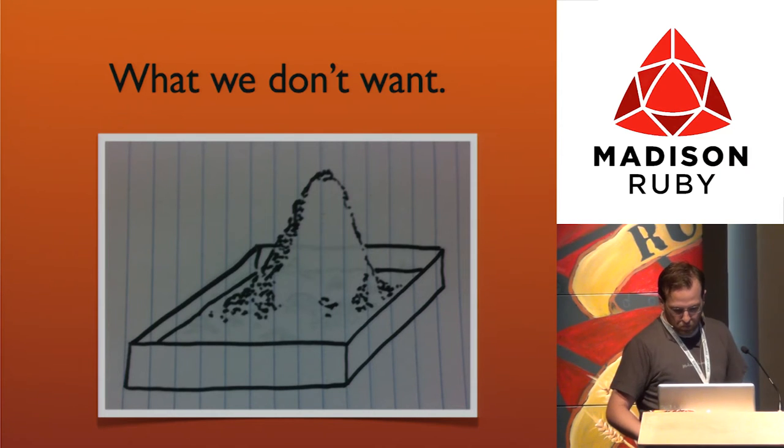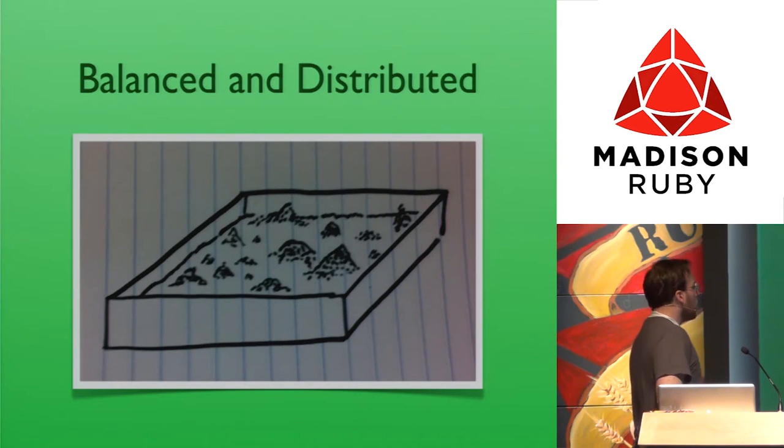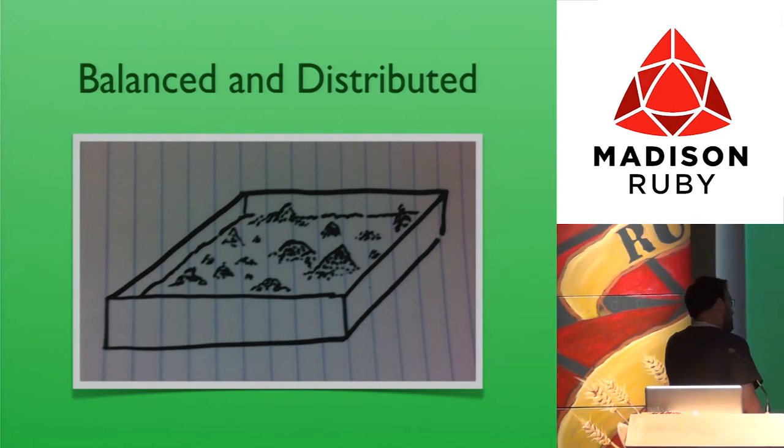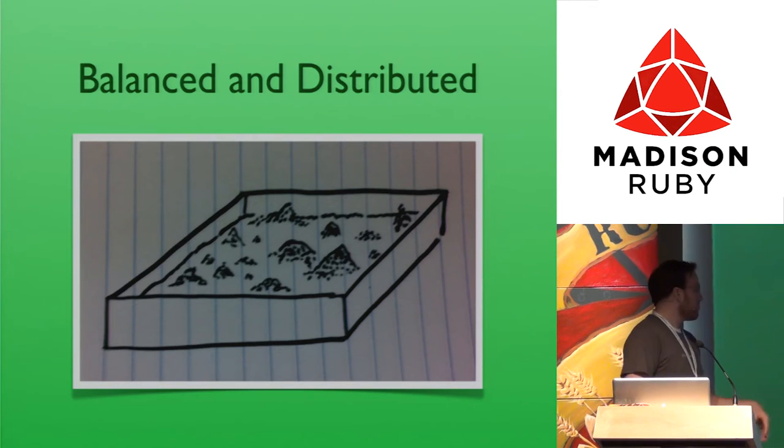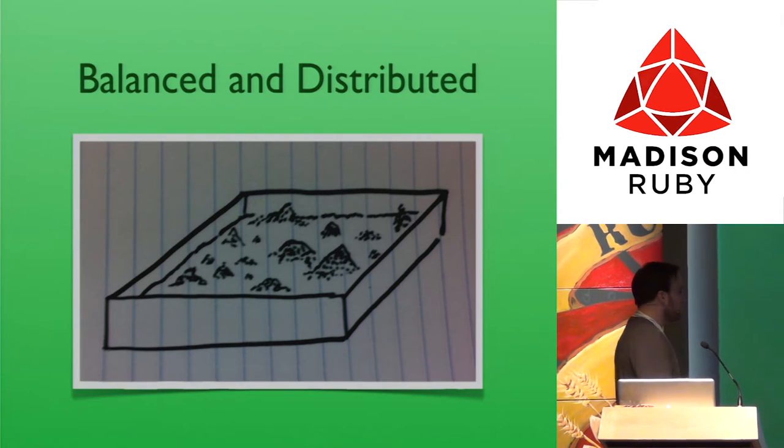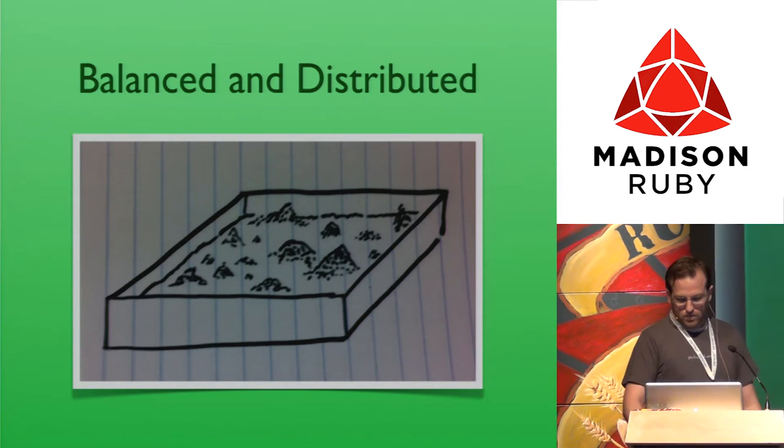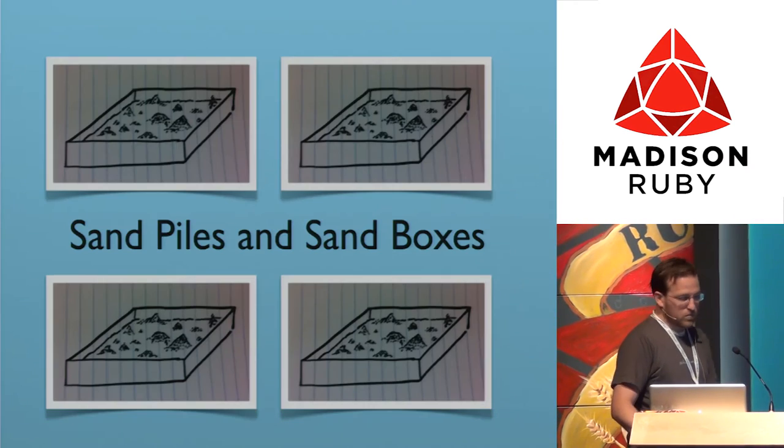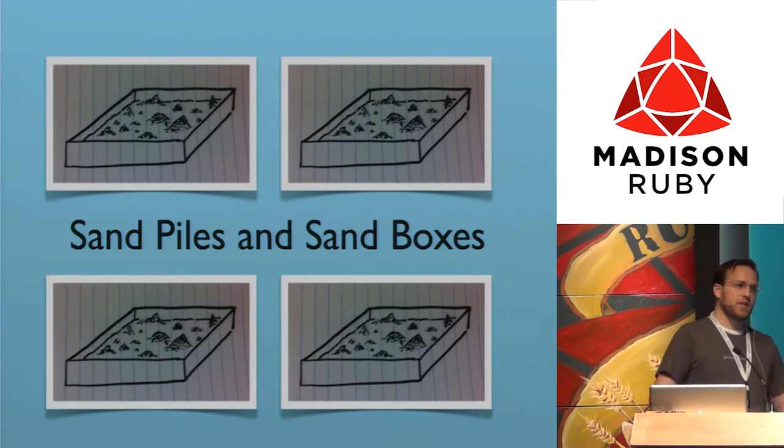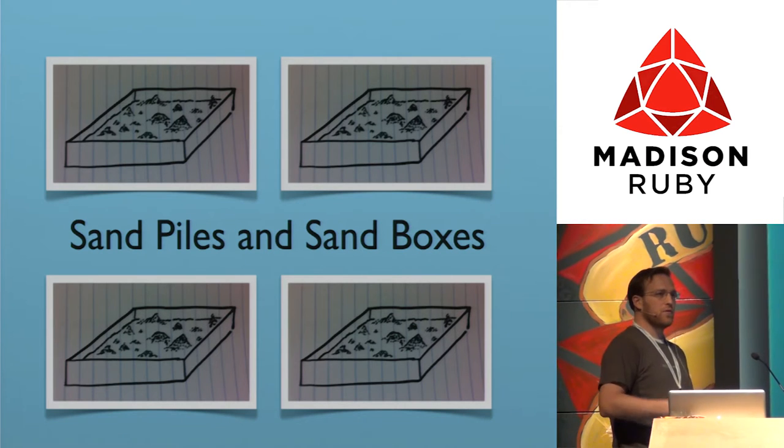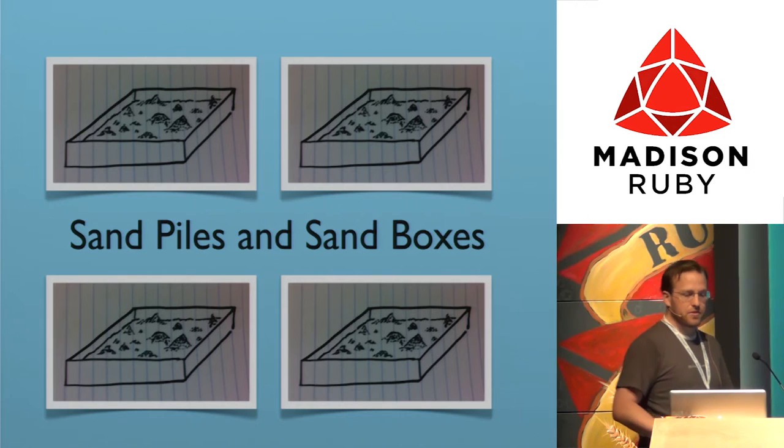This is what we don't want. What we do want is to balance and distribute the set of responsibilities and complexity in our app so that we end up with smaller, more stable sand piles. Sometimes it makes sense to break those things out completely—when you've got completely different sand piles, you've created a clear boundary and you're not letting complexity from one system go into another system.